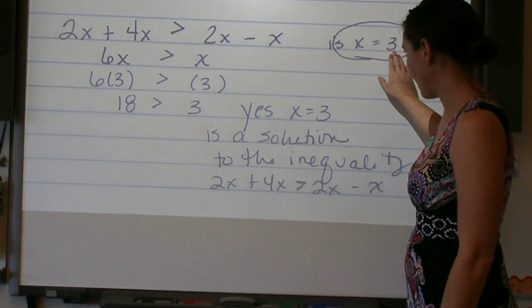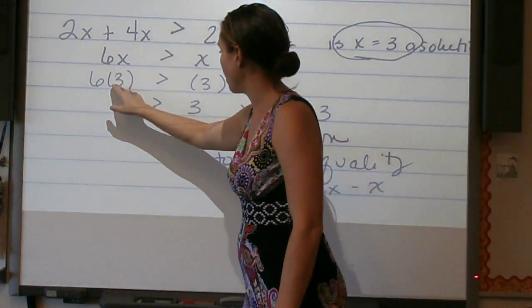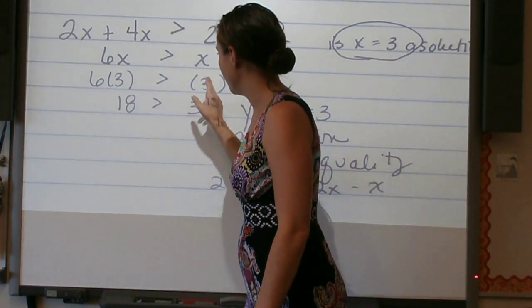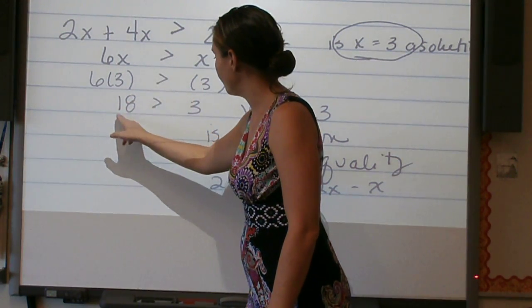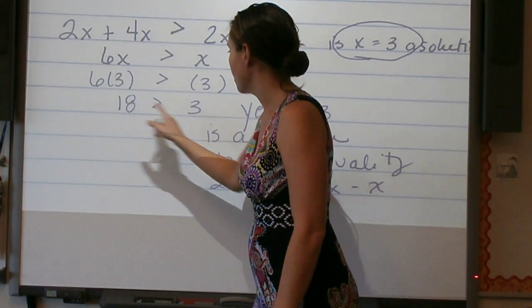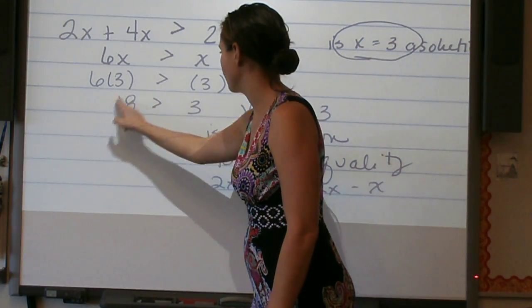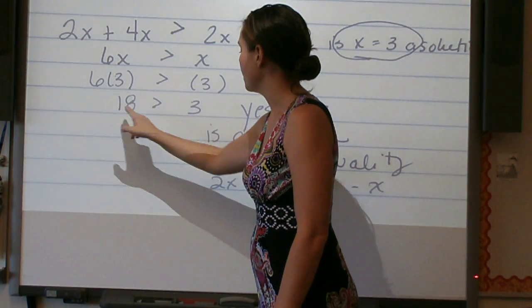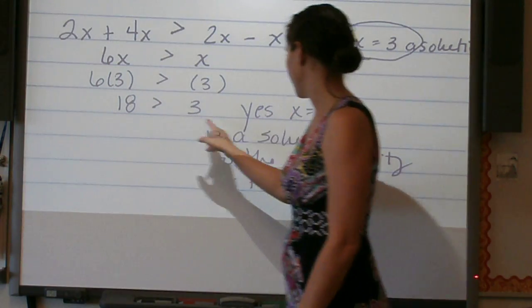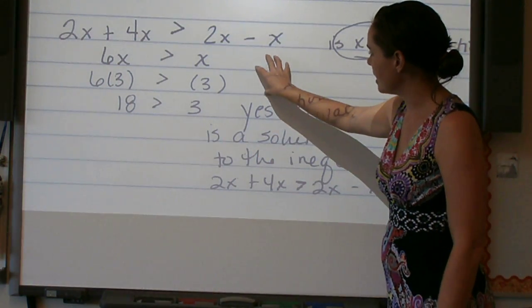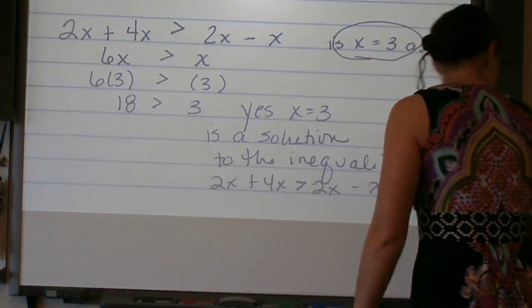And then once we simplify each side, we then ask ourselves, is this true? 18 is greater than 3. So for this inequality, x equals 3 is a solution.